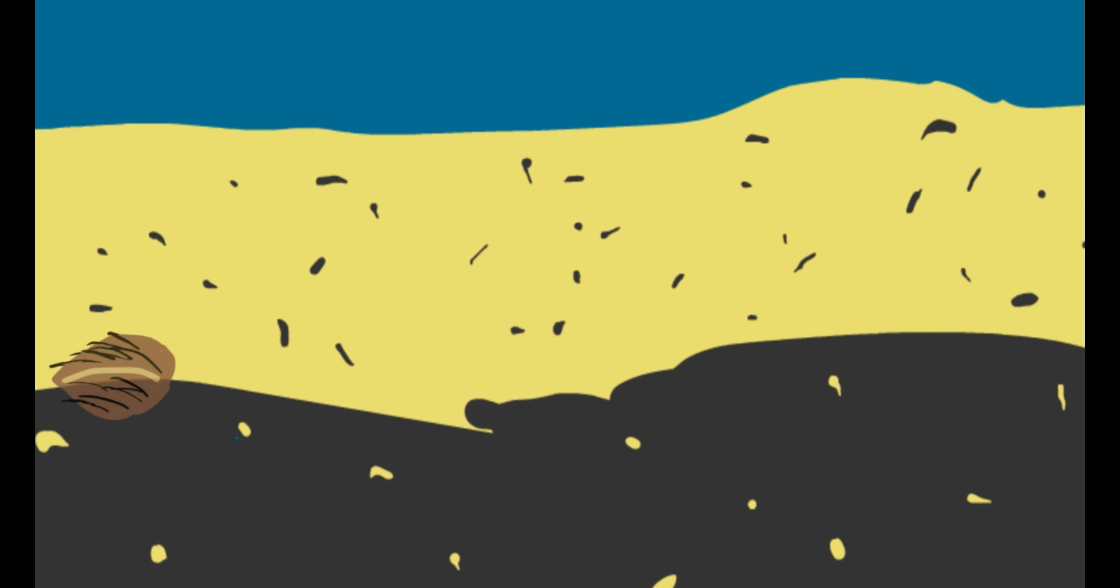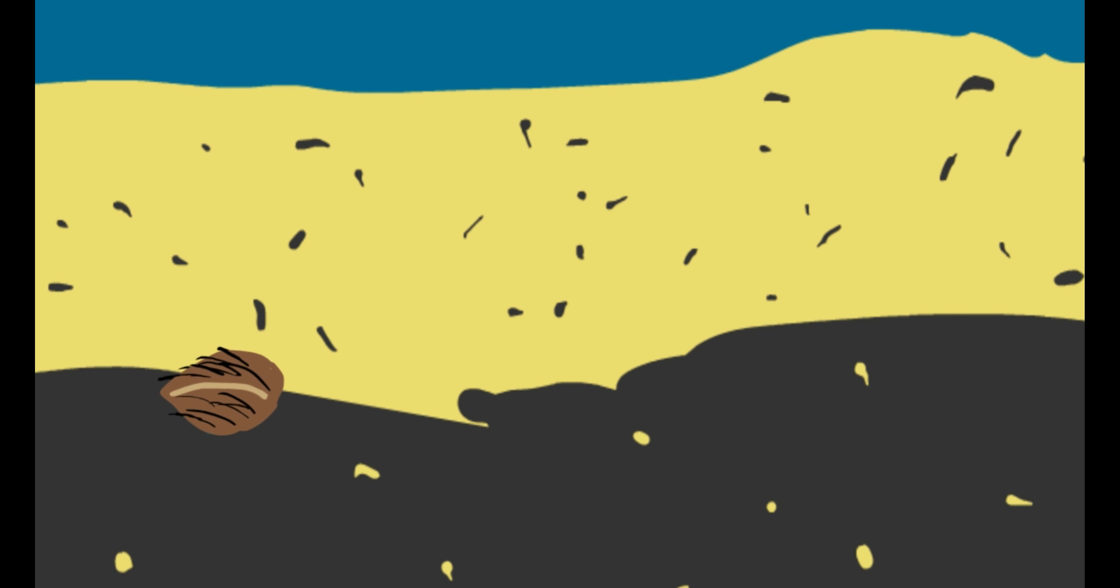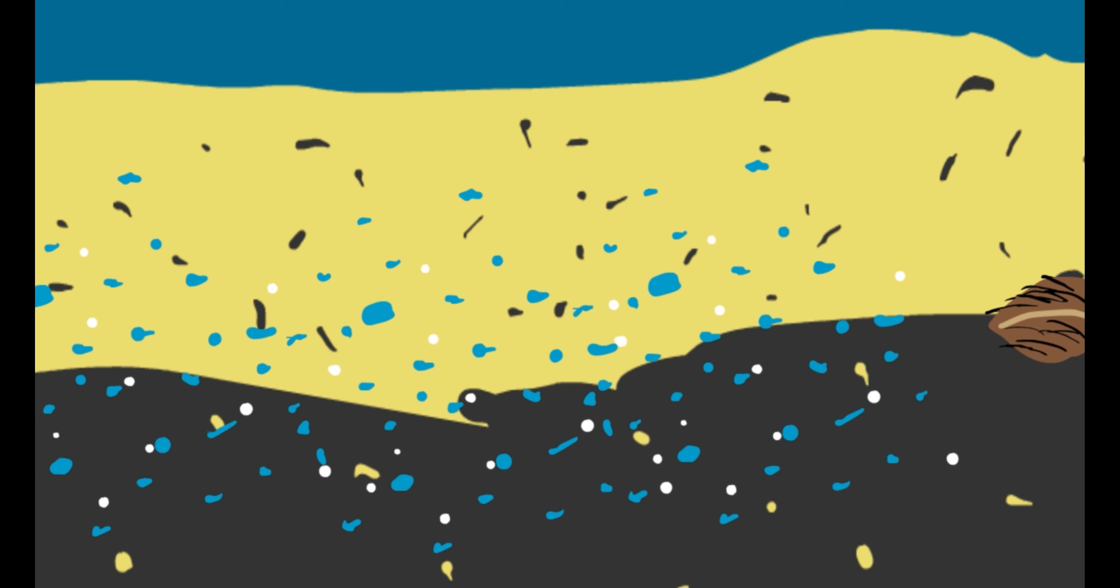Heart urchins live in burrows in the bay floor. They like to crawl between the second and first layers of the floor. They eat and move so much sand that oxygen-rich water is drawn into the lower levels. This makes it easier for other organisms to live at the bottom of the bay.